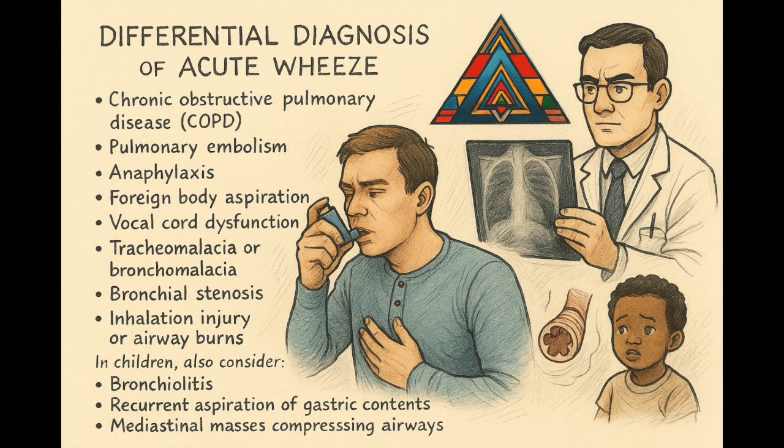In children, consider bronchiolitis, foreign body aspiration, tracheomalacia, and mediastinal masses. Intraoperatively, differential considerations include light anesthesia, endobronchial intubation, endotracheal tube obstruction, or kinking.